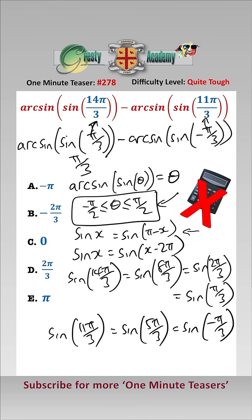So that equals pi over 3 minus minus pi over 3 which is 2 pi over 3, which is answer D.